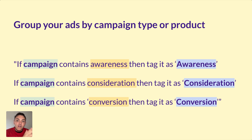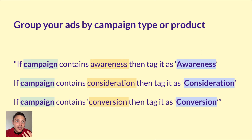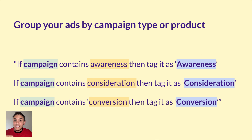Another example is grouping ads by campaign type or product. Many clients have a specific naming convention for their campaign names — for example: Shoes_Awareness_2023_Colombia. With regular expressions I can break down this data. If the Google Ads campaign contains the word 'Awareness', tag it as Awareness; if it contains 'Consideration', tag it as Consideration. This way I can create a table that breaks down data not by campaign, but by funnel stage.